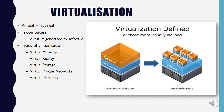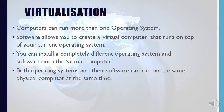With virtualization, we pretend that our computer has other types of operating systems. The picture shows that you could have a whole range of different operating systems pretending to be the operating system on your machine, but they are actually installed above your actual operating system. Computers can run more than one operating system — software allows you to create a virtual computer that runs on top of your current one, and both operating systems can run on the same physical computer at the same time.